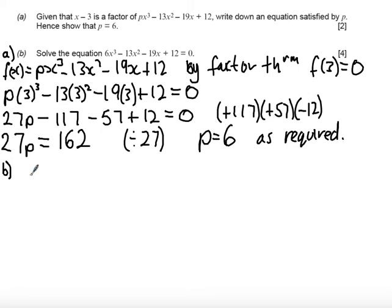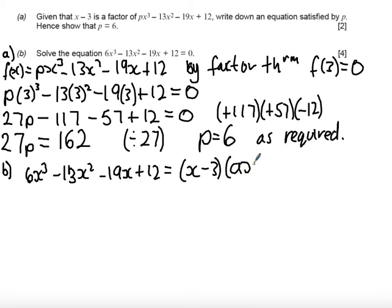so what I know then in this case is that 6x cubed minus 13x squared minus 19x plus 12 is equal to x minus 3 multiplied by some quadratic Ax squared plus Bx plus C. So I just need to find that quadratic.